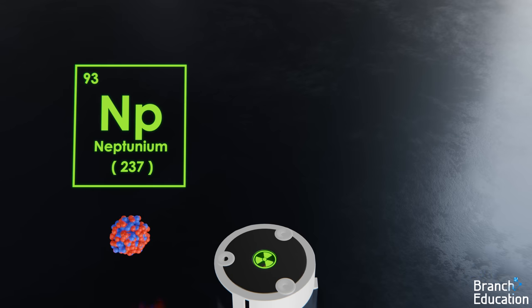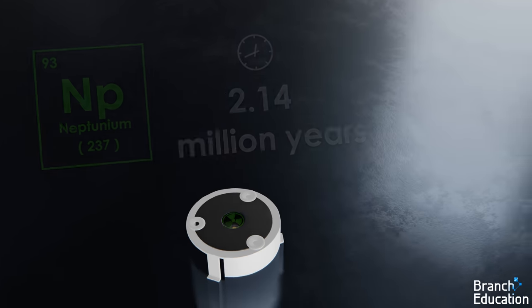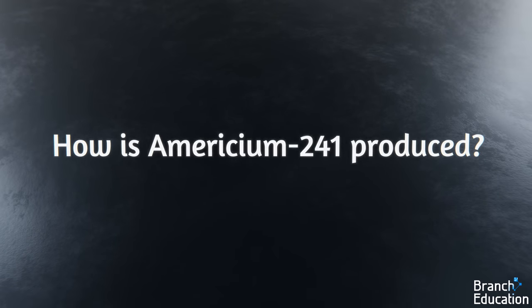But because it has a more stable ratio of protons to neutrons, it has a half-life of 2.14 million years. So then, let's move on to the second question. How is americium-241 produced?